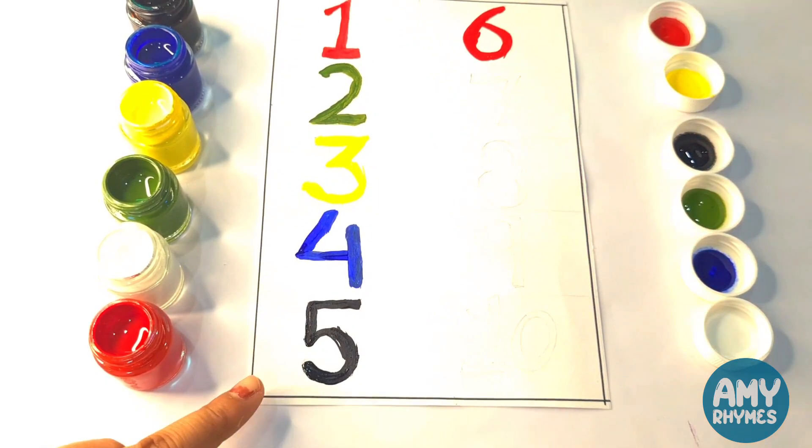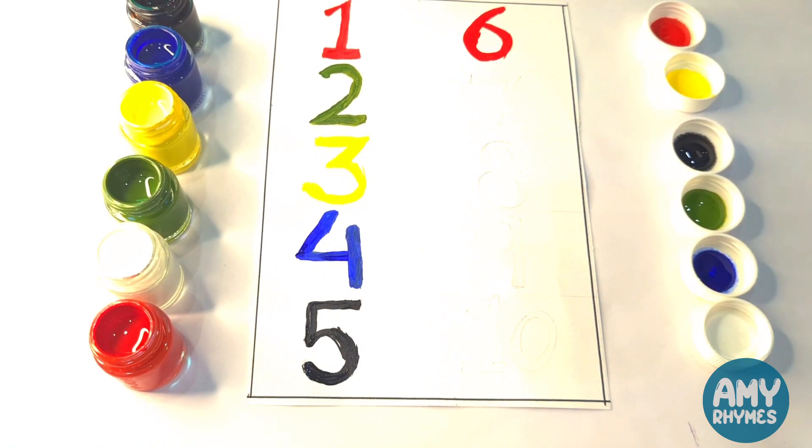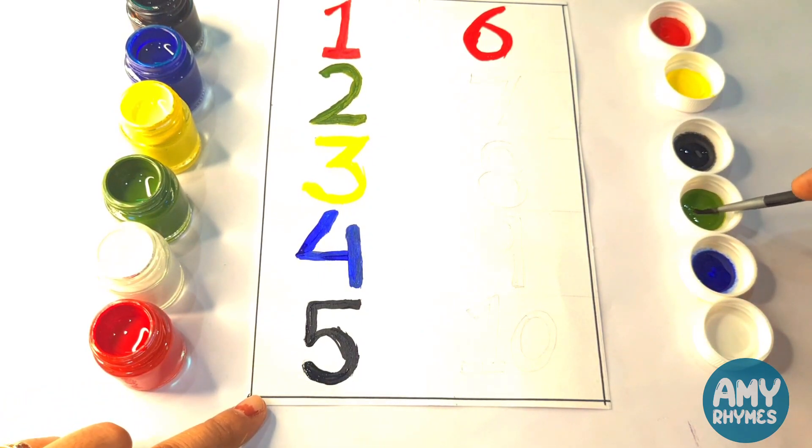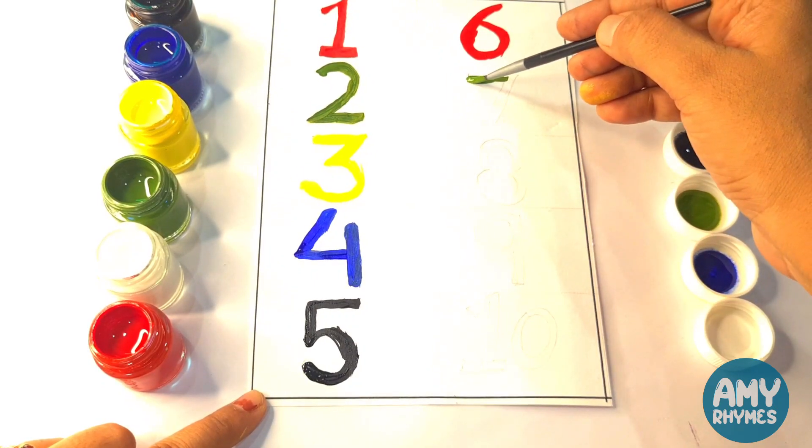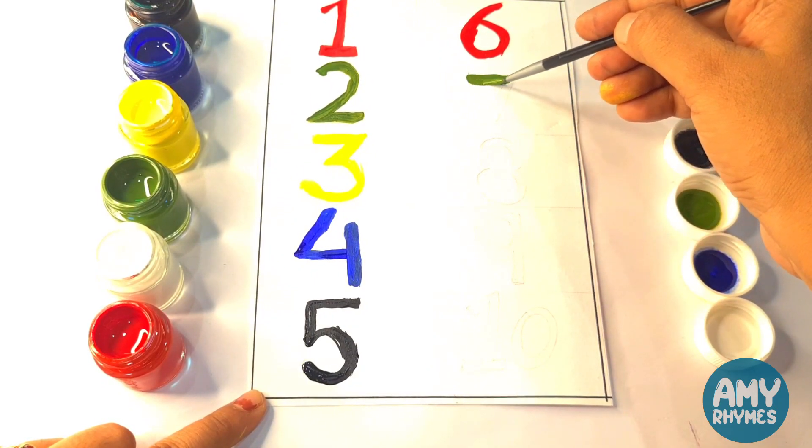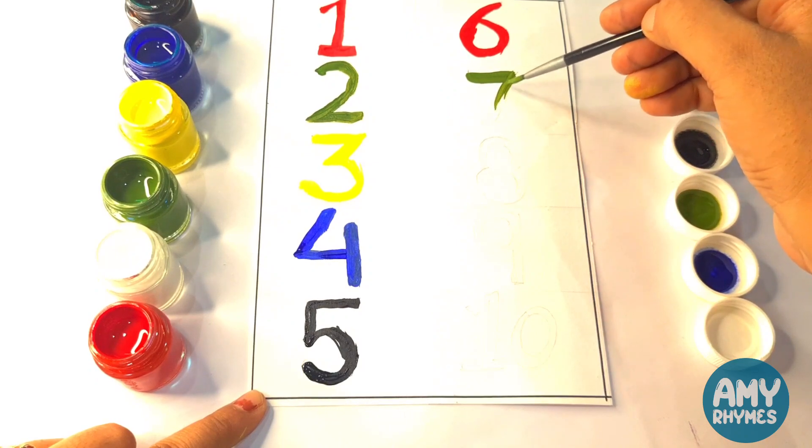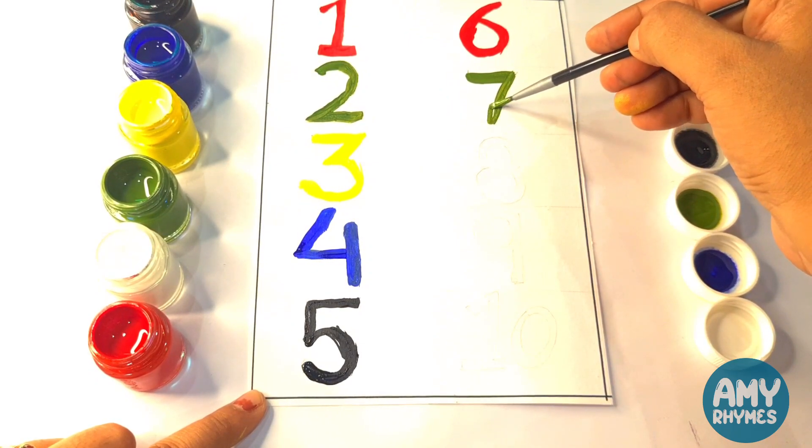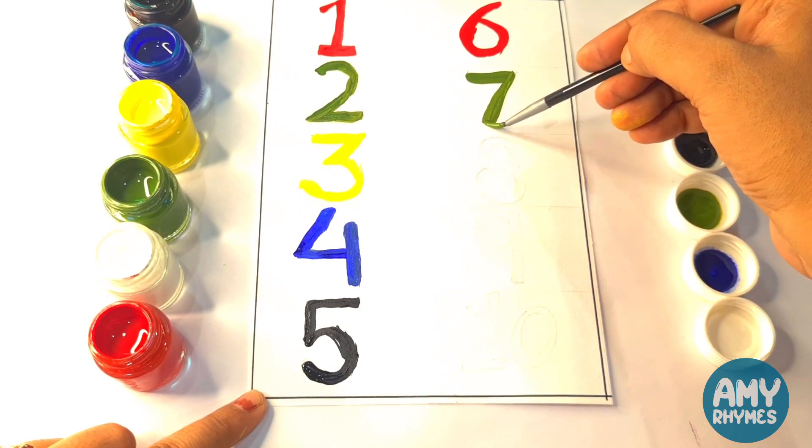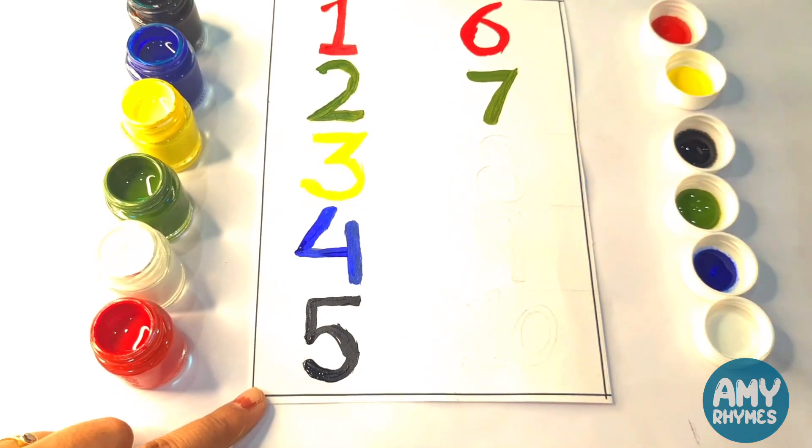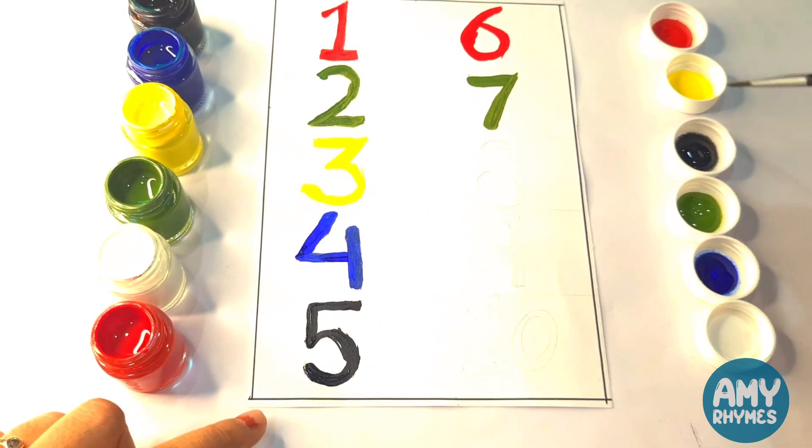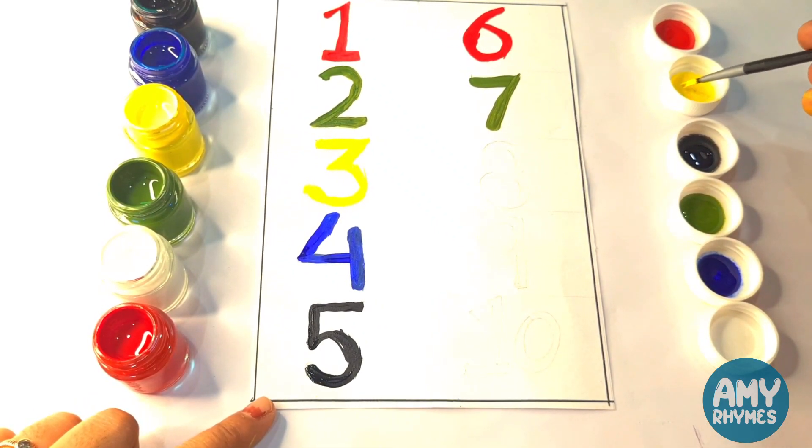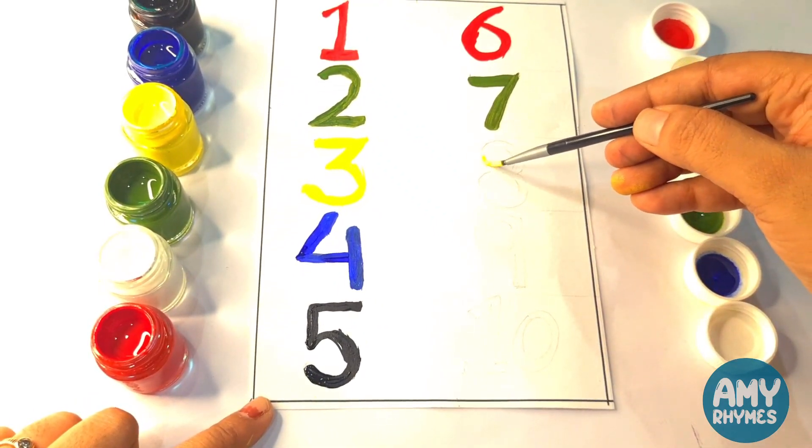It's done. Next is seven. We paint seven with green color. It's done, seven. Next is eight. Eight, we will paint eight with yellow color. It's yellow color.